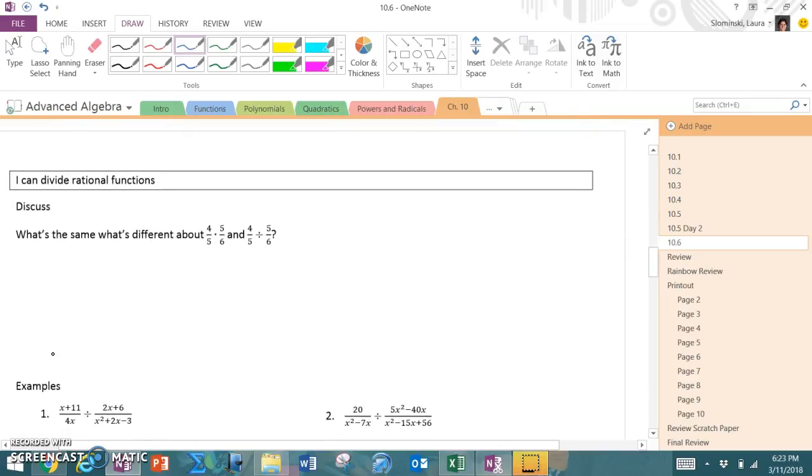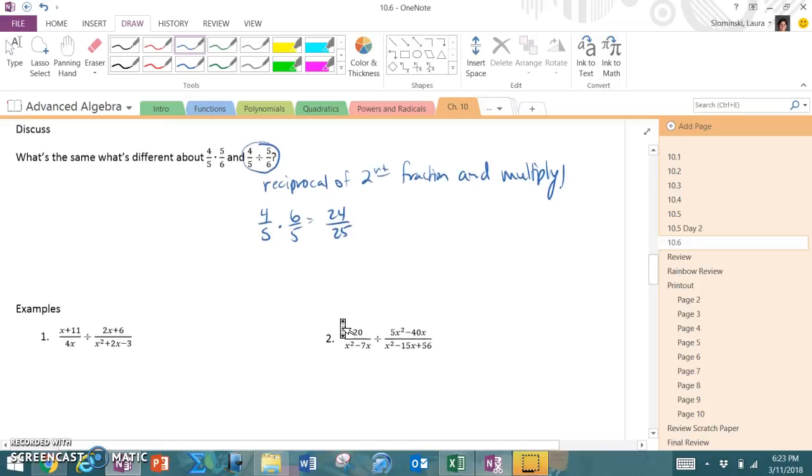Last but not least, we're going to go through this pretty quickly. What about if it's division? Well, the difference between 4 fifths times 5 sixths and 4 fifths divided by 5 sixths. If it's division, we take the reciprocal of the second fraction and multiply. So the good news is, it's nothing brand new. But in this case, I would take 4 fifths times 6 over 5, which would give me 24 over 25. So we're going to use that strategy as we look here.